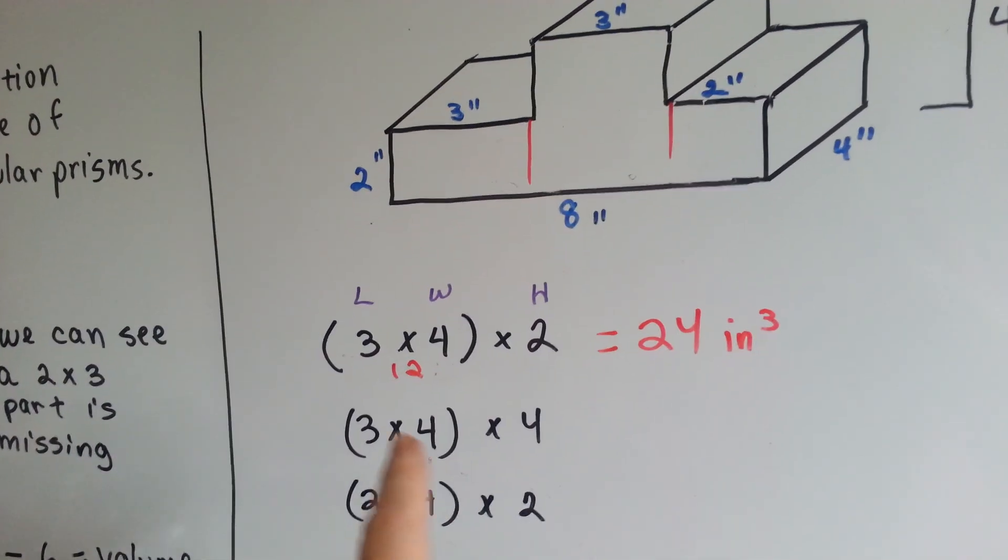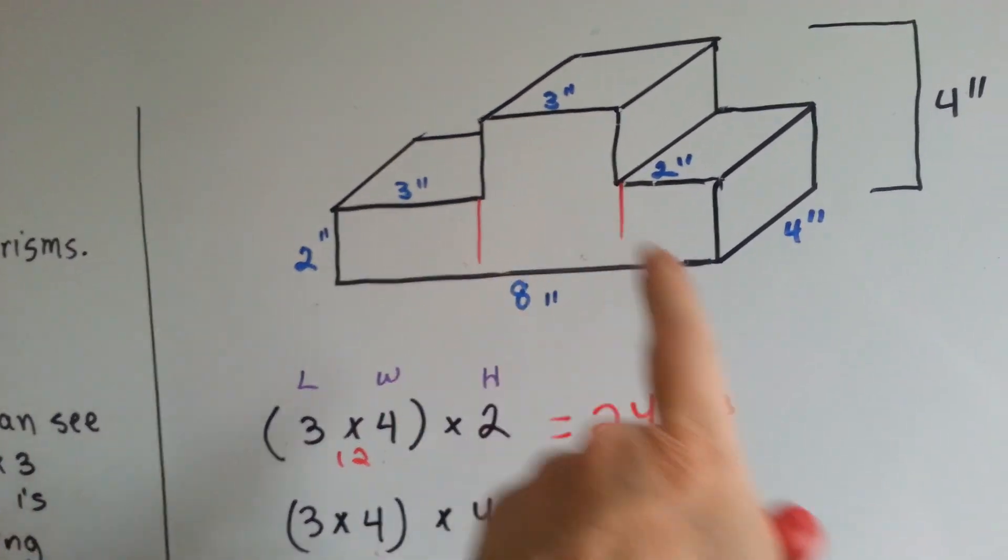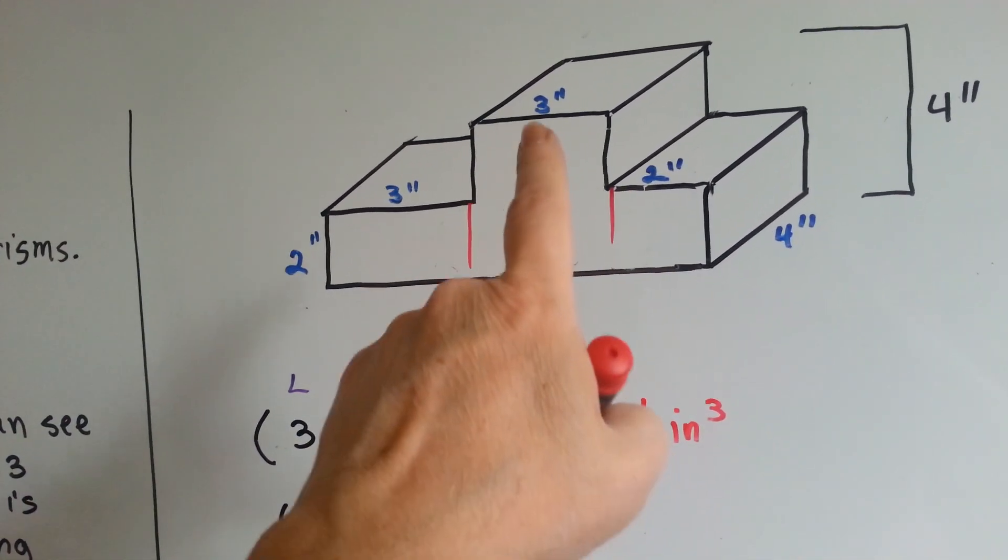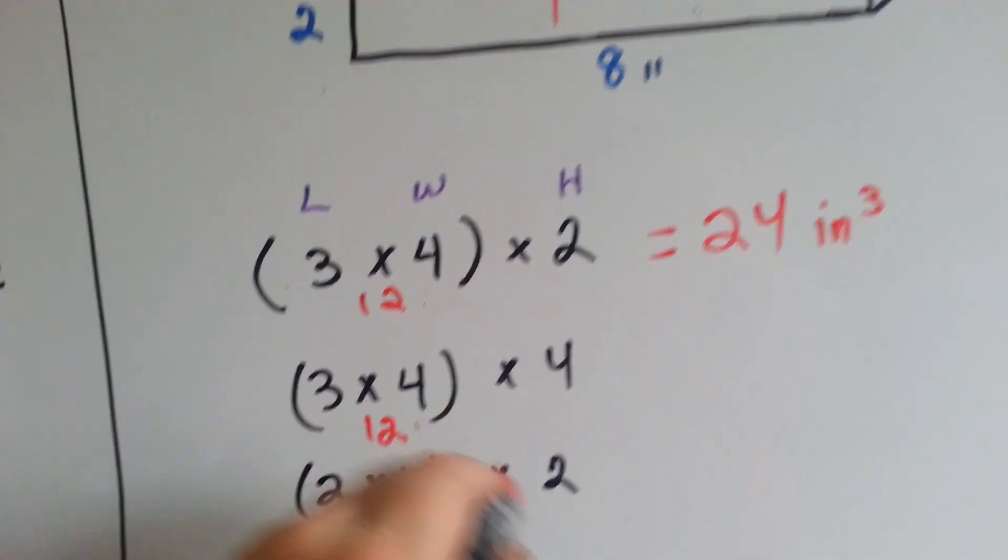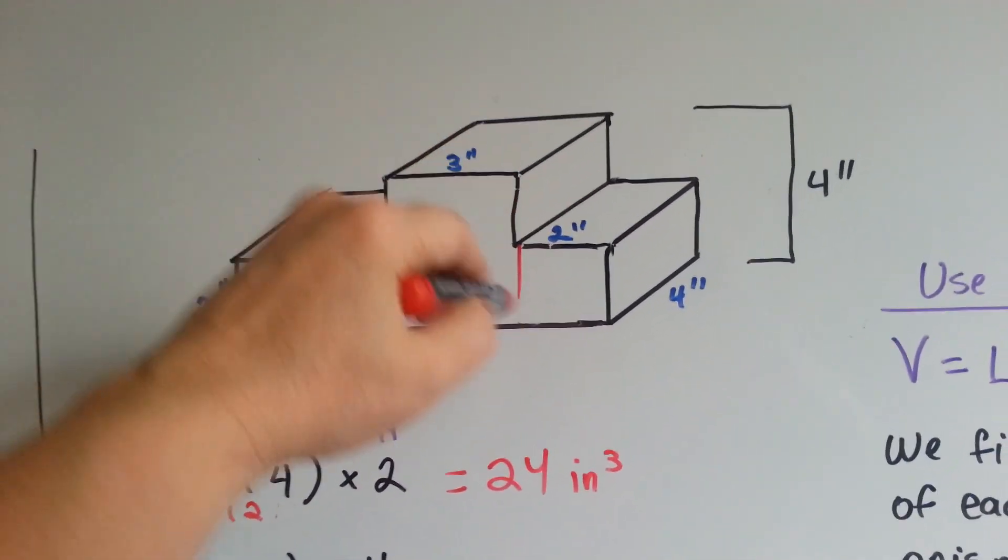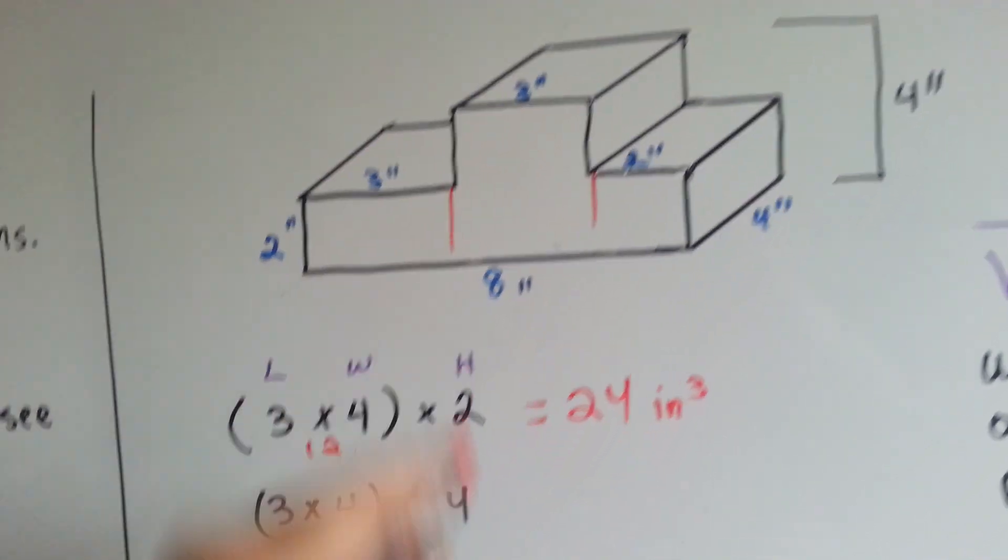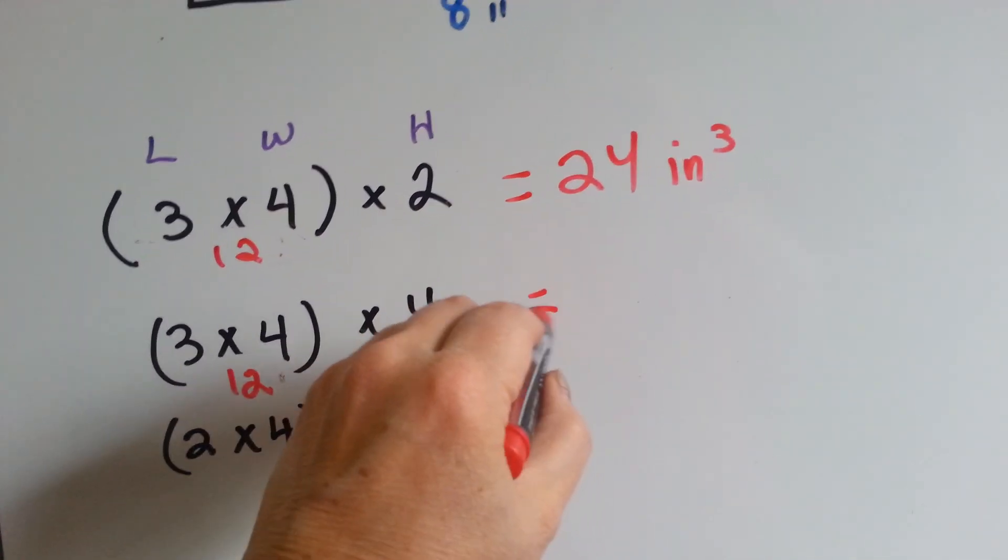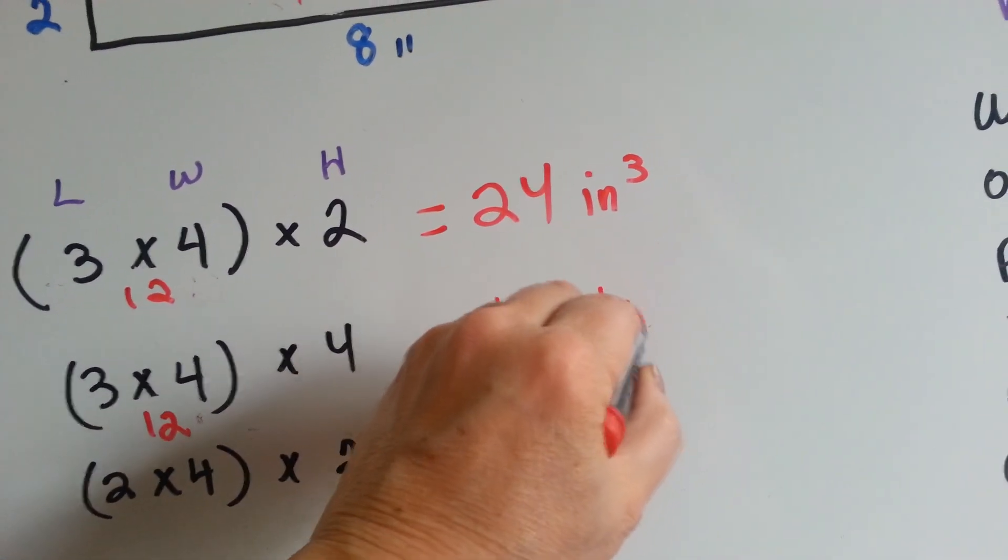Because we're doing each one separately. Then the second one is 3 times 4, which is 12 again. But its height is 4. Because we can see here that it's 4. 12 times 4 equals 48. And that's inches cubed.